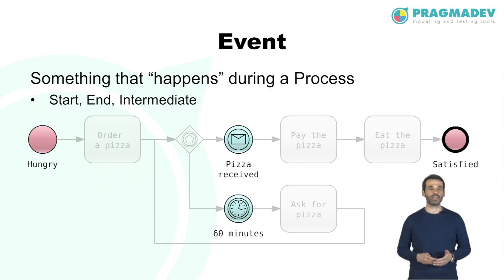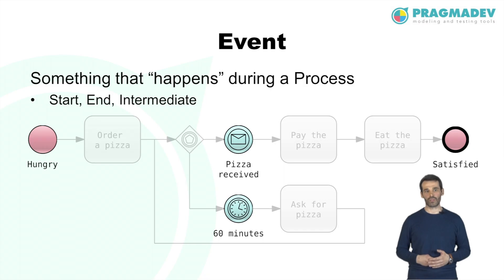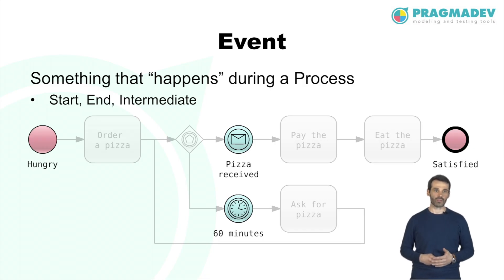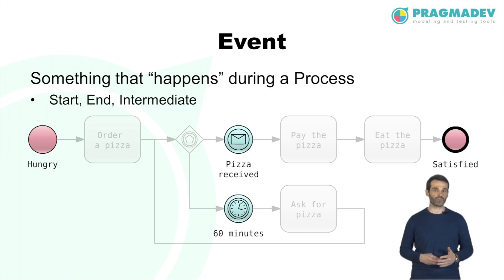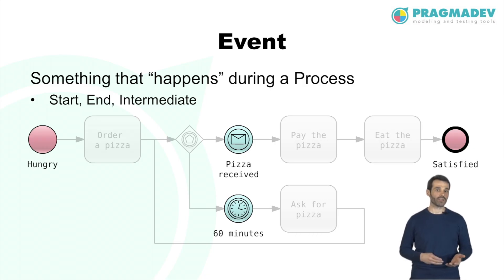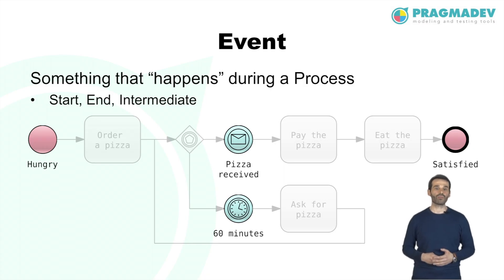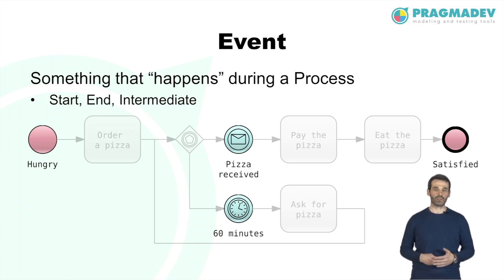An event is something that happens during the course of a process and affects the flow of the process. The start of a process, the end of a process, a message that arrives, or a timer that fires are all examples of events. There are three main types of events: start, end, and intermediate.